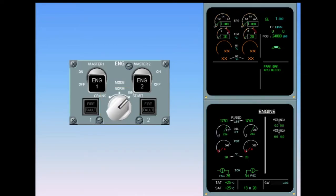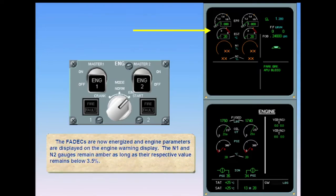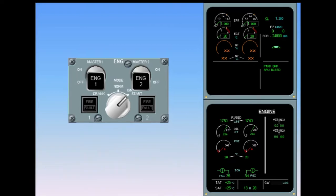The full authority digital engine controls are now energized and engine parameters are displayed on the engine warning display. The N1 and N2 gauges remain amber as long as their respective value remains below 3.5%. Note that the ECAM engine page has automatically replaced the door oxygen page.